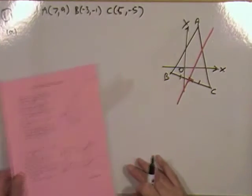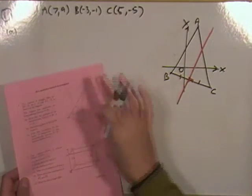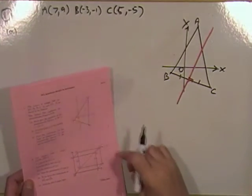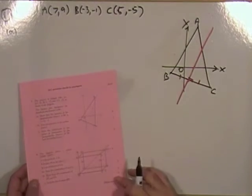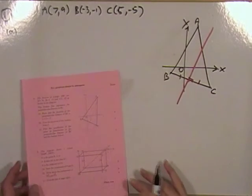Question 1 from paper 2. Straight away you look at that and think, great — it's 10 marks and it's 2 lines and a point of intersection, just what you want.